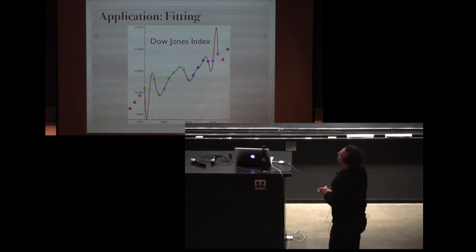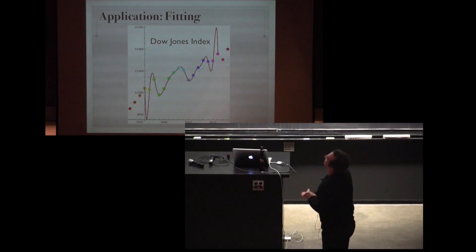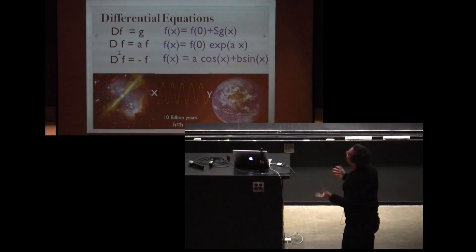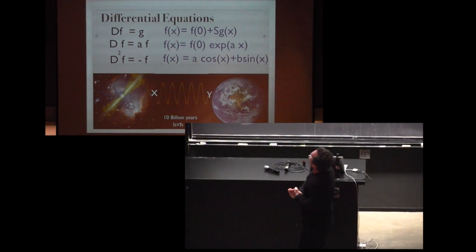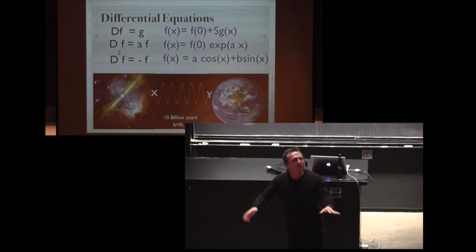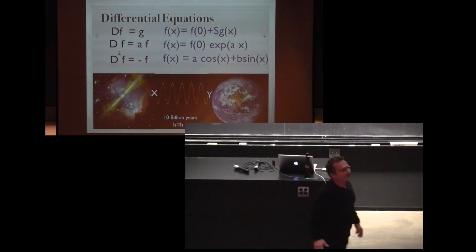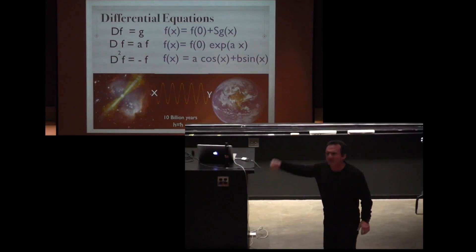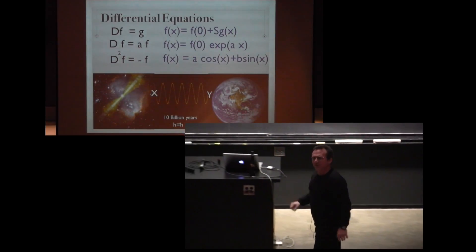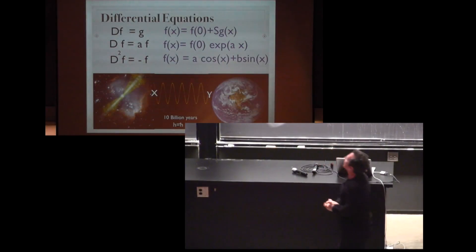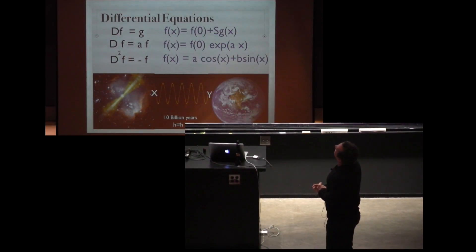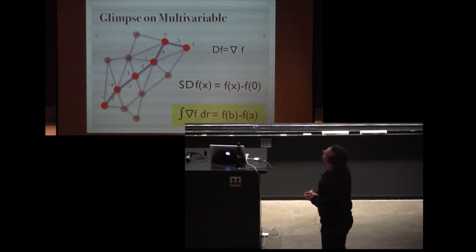We can even shift more gears and go to multivariate. Oh no I didn't. I also wanted differential equations. Differential equations also here. We don't have to rewrite the books. Everything you see in the books is true. Just replace the derivative with a D and deform the functions. This is the harmonic oscillator. Of course the cosine and sine of these deformed functions. Everything is the same as we know it.